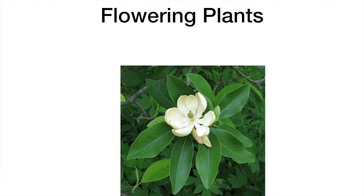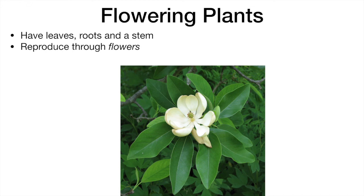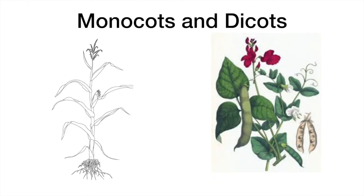Like ferns, flowering plants also have leaves, roots and stems. Flowering plants can be subdivided into two categories: monocotyledonous plants and dicotyledonous plants.